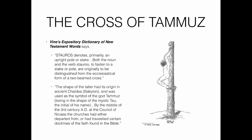Vine's Expository Dictionary of New Testament Words states that 'stauros' denotes primarily an upright pole or stake. Both the noun and the verb 'stauroo' — to fasten to a stake or pole — are originally to be distinguished from the ecclesiastical form of the two-beamed cross. The shape of the latter had its origin in ancient Chaldea or Babylon and was used as the symbol of the god Tammuz, being in the shape of the mystic tau, the initial of his name.